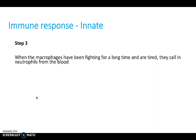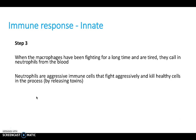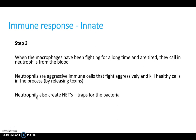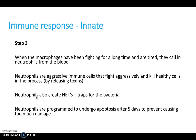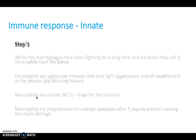Step three: when macrophages have been fighting for a long time and are tired, they call in neutrophils from the blood. Neutrophils are very aggressive immune cells that fight aggressively and kill healthy cells in the process — this is maybe where we start to feel a bit run down by our infection. Neutrophils also create nets as traps for bacteria. They are programmed to undergo apoptosis after five days to prevent causing too much damage.